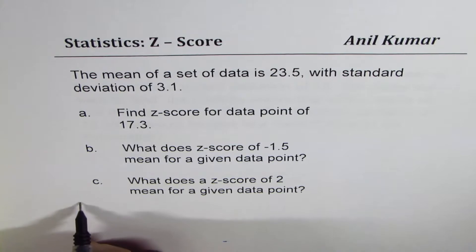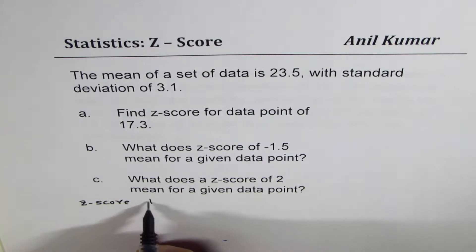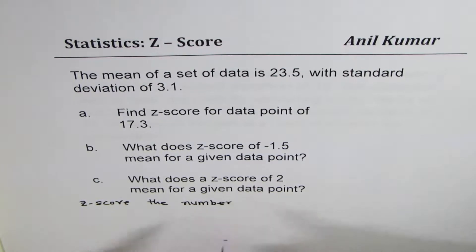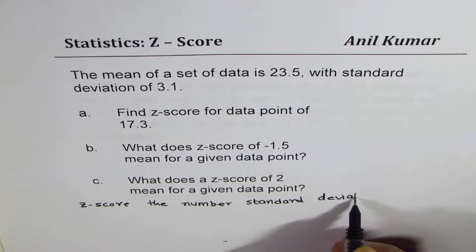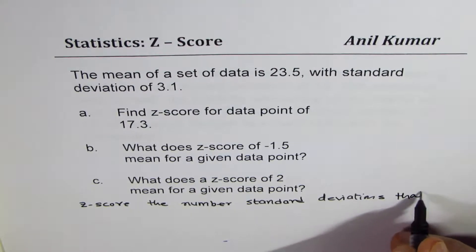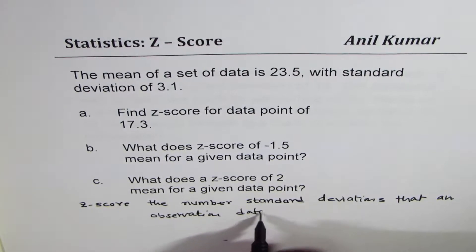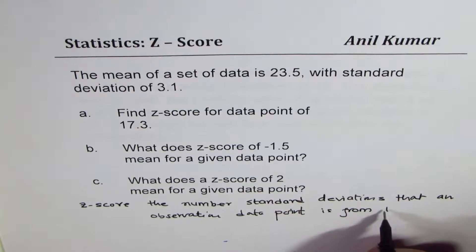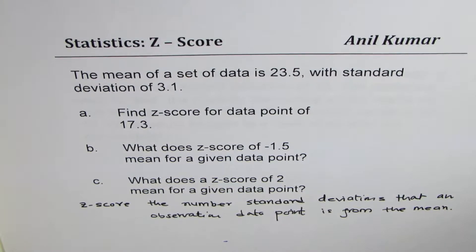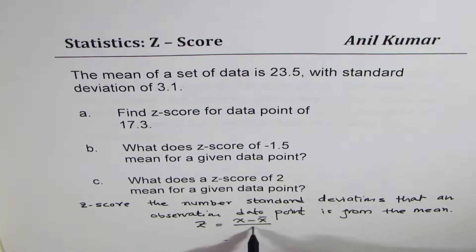First, let's understand what is z-score. Z-score tells you the number of standard deviations that a data point is from the mean. That is what we understand by z-score. The simple formula is: z equals x minus the mean, divided by the standard deviation. For a sample, the standard deviation is represented as s.